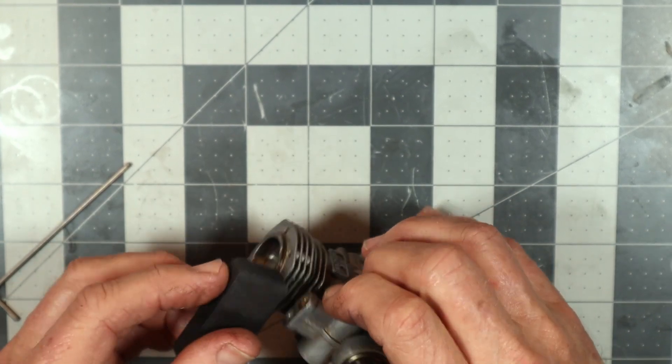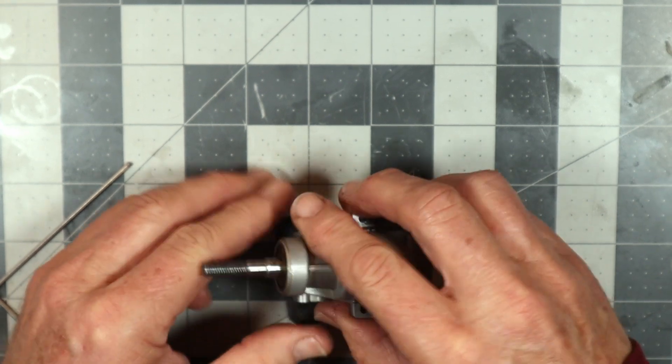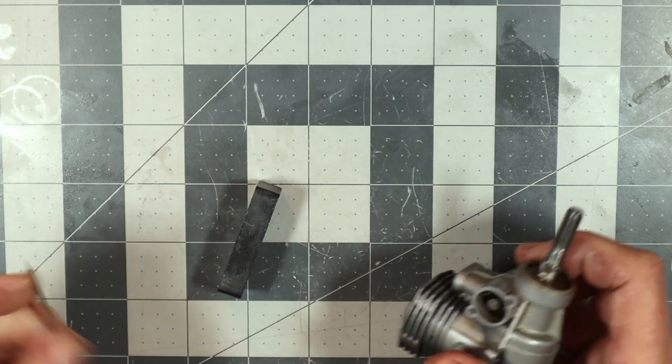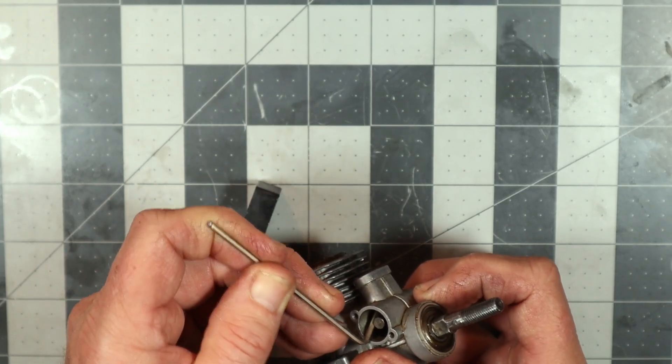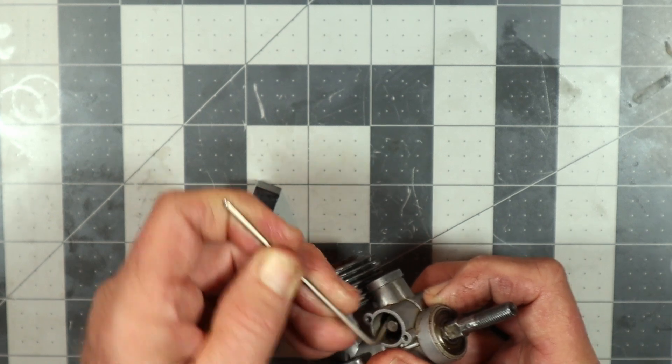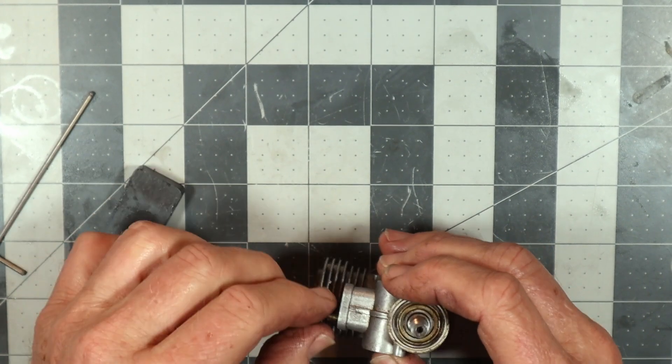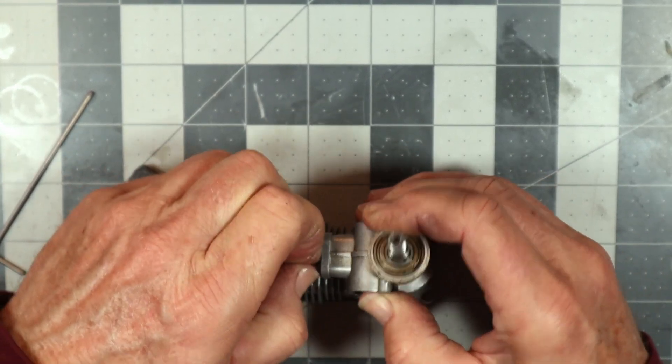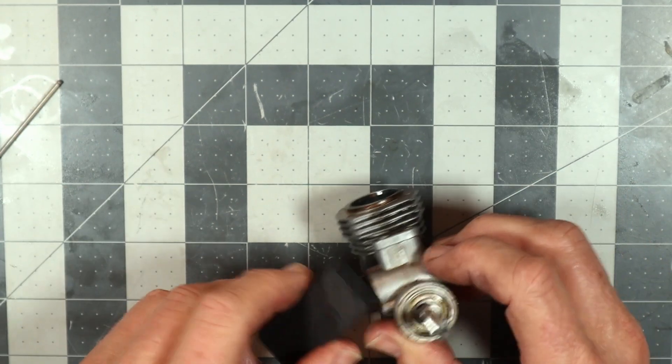That cam gear is going to have to come out obviously too. I can shove one of these tappets up. There we go, there's one of them. There's a tappet out. Now this thing should come out.